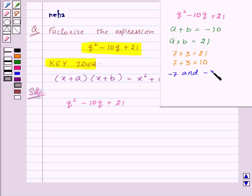Here, minus 7 plus minus 3 is equal to minus 10. Also, minus 7 into minus 3 is equal to 21.